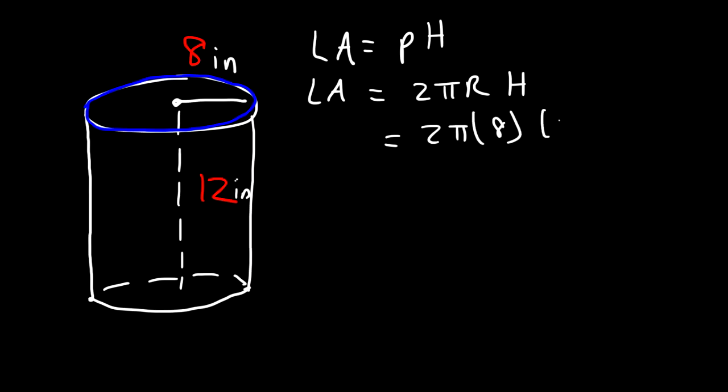So 2 times 8, that's 16, and 16 times 12 is 192. So the lateral area of this cylinder is 192π square inches.